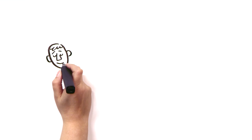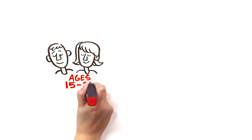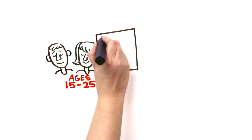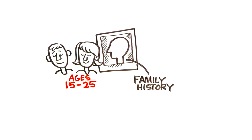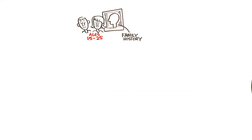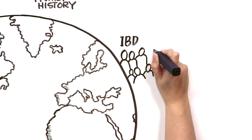IBD is usually diagnosed in young people, say 15 to 25, but it can appear at any time. There is slightly increased risk for those who have a family member with a condition and IBD is more common in white people and more prevalent among Jewish people of European origin.